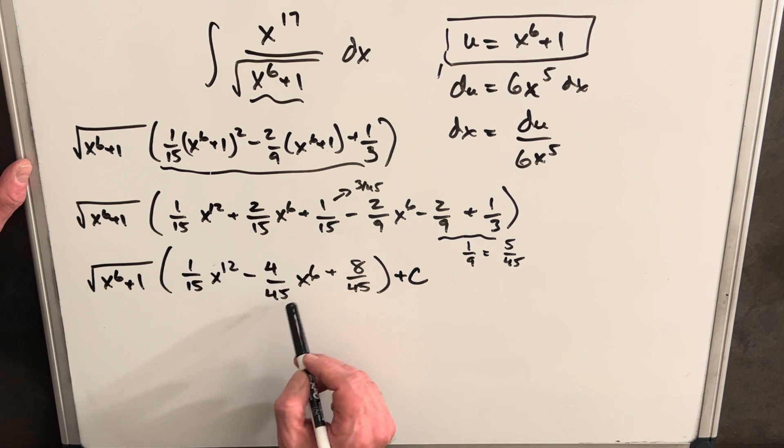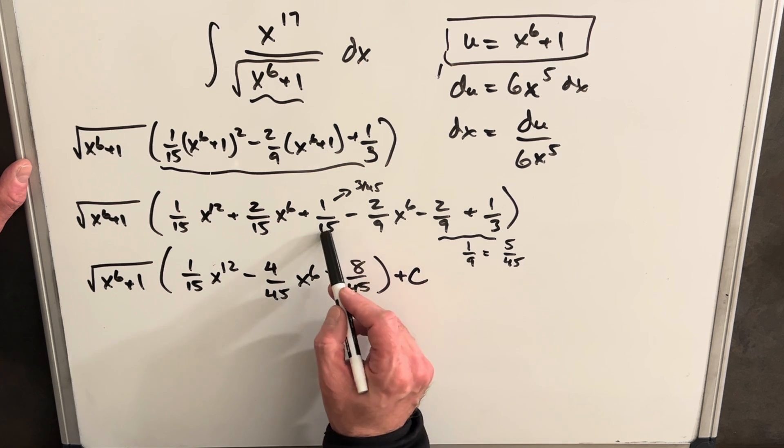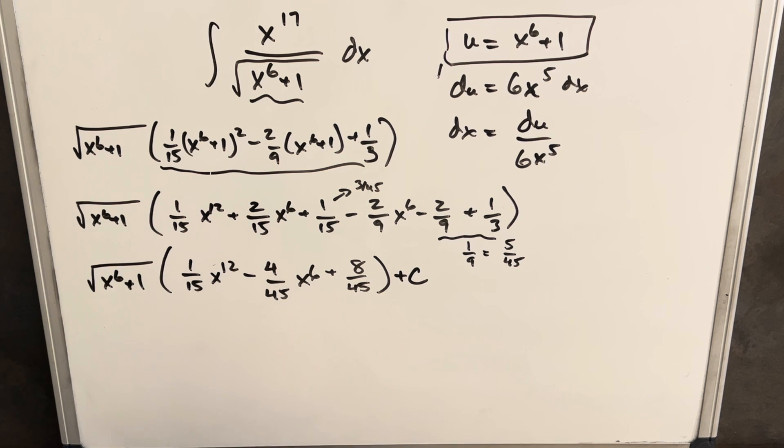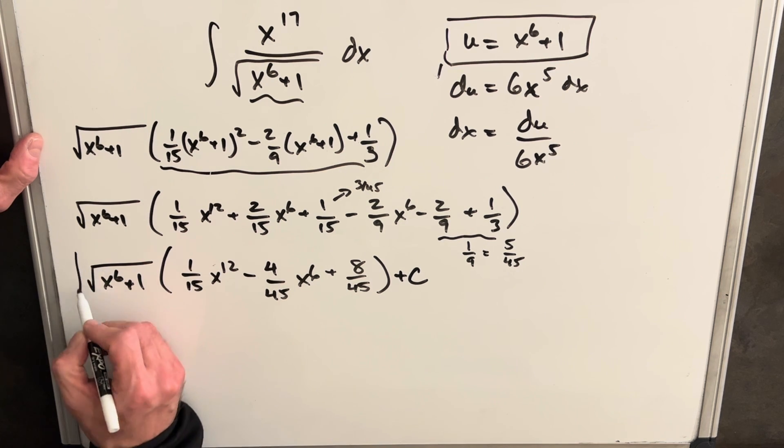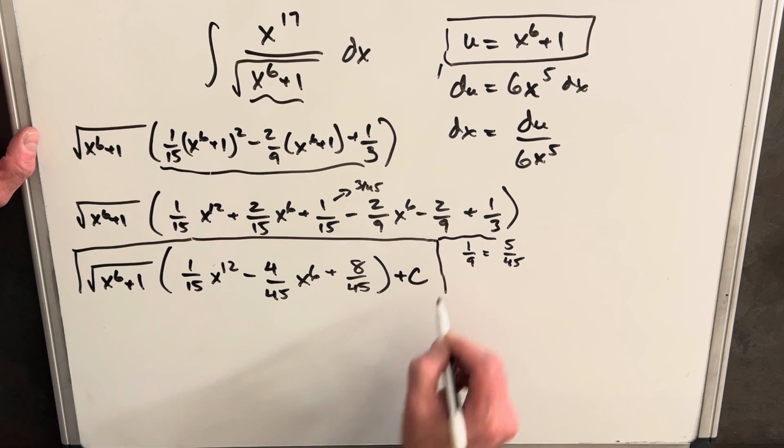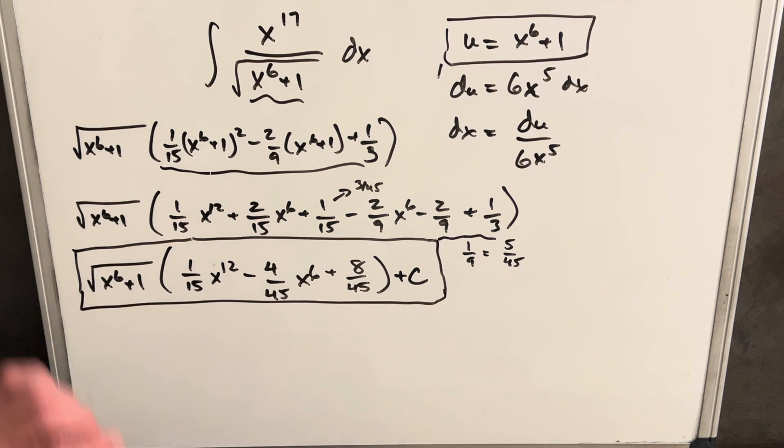And then so just combining like terms, we combined our x to the 6th terms to get this, and we combined all of our constant terms. And we got a common denominator here of 45, and so we have this kind of complicated looking final answer, but the substitution and the integral actually wasn't too bad. So that's our result.